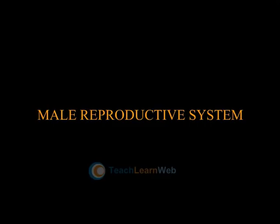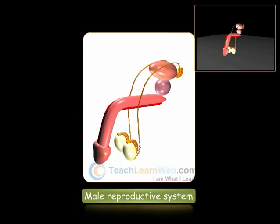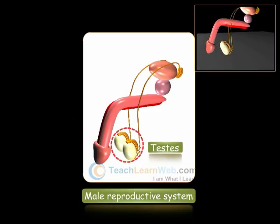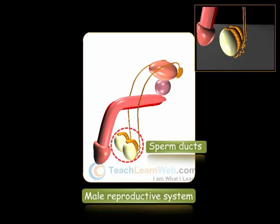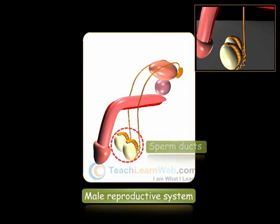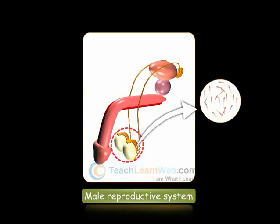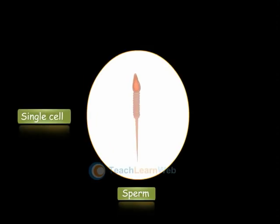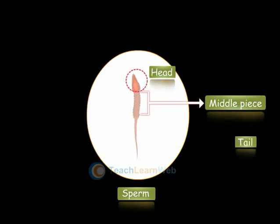Male Reproductive System. This system is constituted by various organs like a pair of testes, two sperm ducts, and a penis. Testes produce millions of male gametes called sperms. A sperm is a single cell which is very small in size. Each sperm is made up of a head, a middle piece, and a tail.